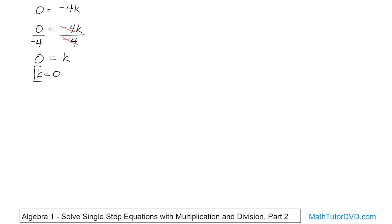Now this is kind of an obvious answer. If you stick this in here, how can you get 0? Well, k has to be 0 multiplied by negative 4 to give us 0. So it does satisfy the equation.